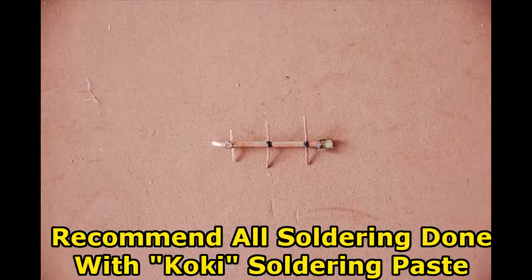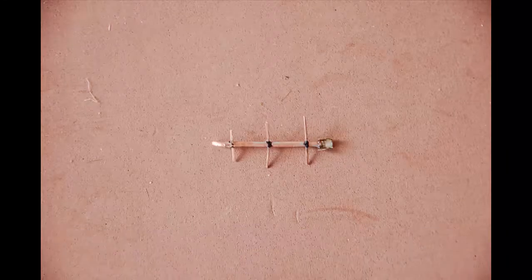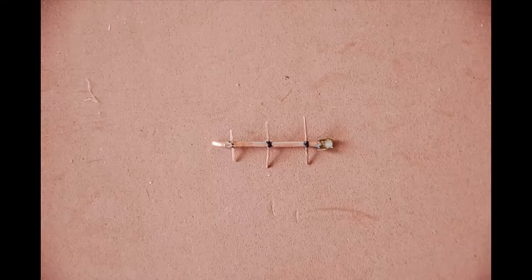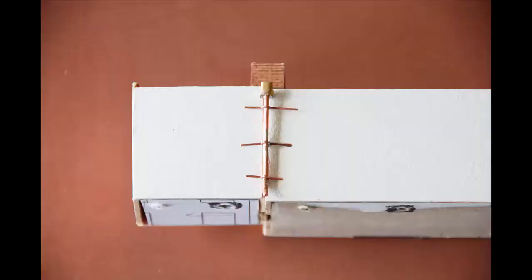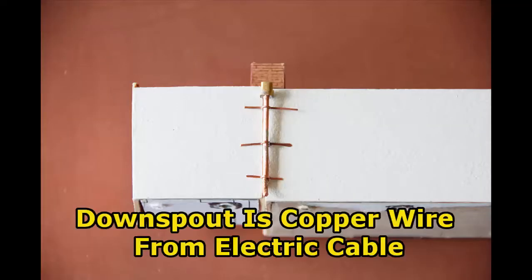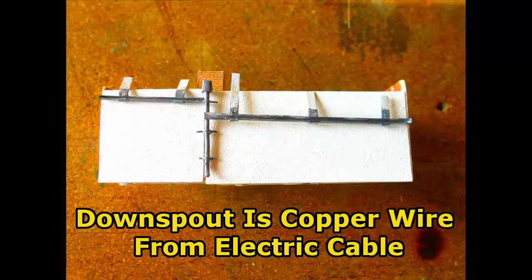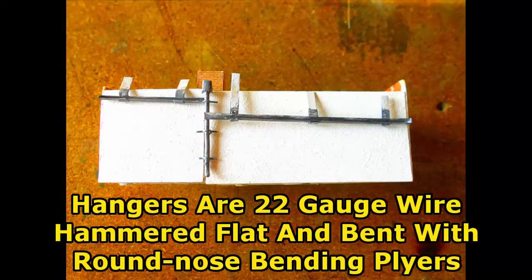To make the downspout, I use some copper wire for the downspout itself, then some 22 gauge wire that I tap flat and bend around that copper wire. I make a junction box out of some 0.1 millimeter brass and solder that up to the top, and I also solder those tabs on with Cokie solder.